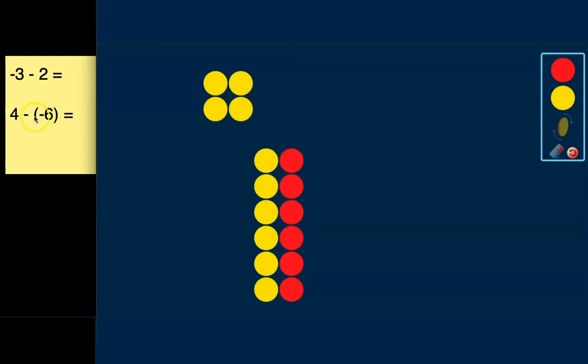The problem is asking us to subtract negative 6. So the red ones. We're going to subtract these. We're going to subtract 1, 2, 3, 4, 5, and 6.